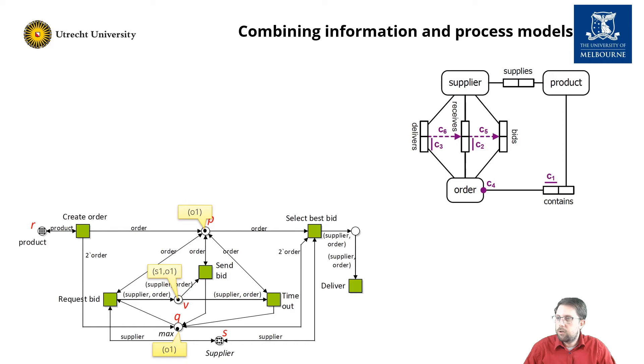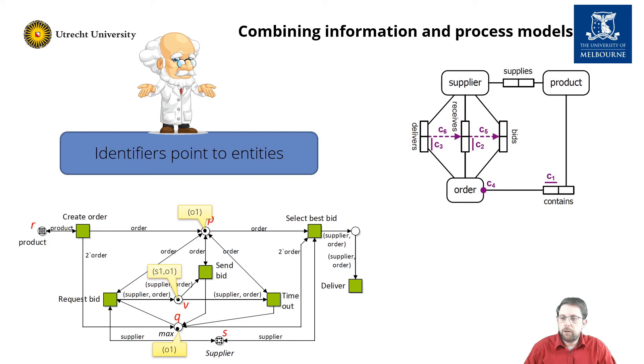Now the basic question is how to combine these models. The basic idea is well grounded in Petri nets. The identifiers point to the actual entities in the information model. In a way, the identifiers of the tokens are part of the population in an information model. So for example, o1 is actually an order. So that means that we can also define manipulations to transitions. Firing a transition manipulates the actual population of the information model. So consider transition send bid. It signifies that the supplier bids on the order o1, as the token carries the vector s1, o1.